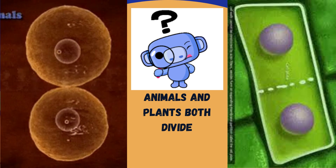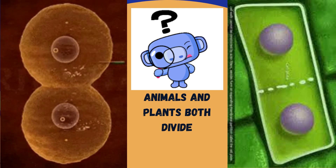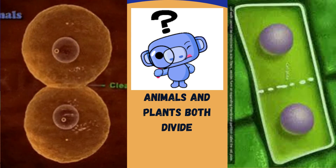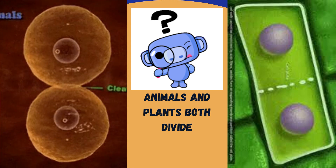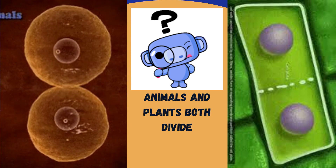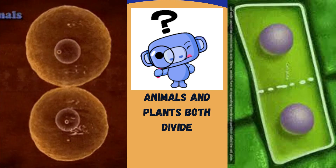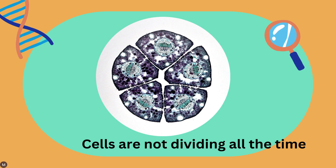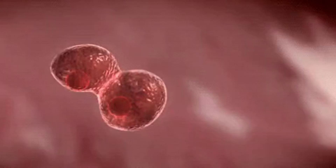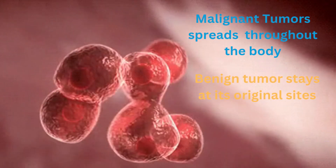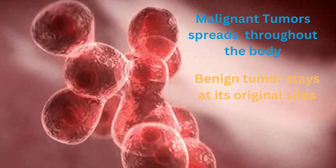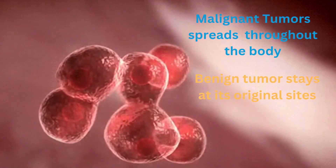Meiosis is taking place in germline cells, which are the reproductive cells — that means sperm and egg in animals. It's really important to understand that your cells are not dividing all the time. If all they did was divide, it would just be rapid, uncontrolled growth. In fact, this is essentially what cancer is — cancer is uncontrolled cell growth.